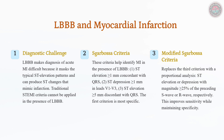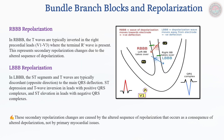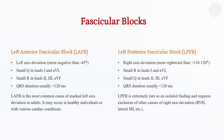Fascicular blocks occur when conduction is delayed or blocked in the anterior or posterior fascicles of the left bundle branch. Left anterior fascicular block (LAFB) is the most common, producing left-axis deviation, small Q waves in leads I and AVL, and small R waves in leads II, III, and AVF. Left posterior fascicular block (LPFB) is rarer and manifests as right-axis deviation with opposite ECG findings. Fascicular blocks often indicate underlying structural heart disease and may precede more advanced conduction disturbances.